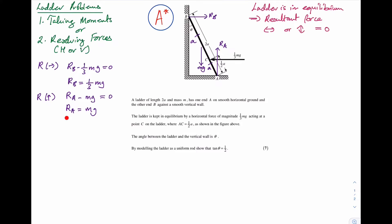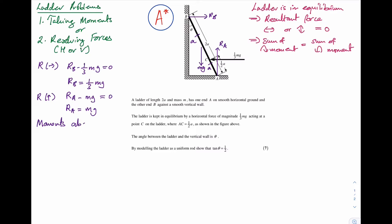I've got RB and I've got RA. I need to show that tan theta is equal to 1/2. Going back to the options: taking moments, or resolving forces. I've used option 2 to find RB and RA, so now to show that tan theta equals 1/2 I need to use option 1 — taking moments. The ladder is in equilibrium, which implies the sum of clockwise moments is equal to the sum of anti-clockwise moments. I'll take moments about point A.